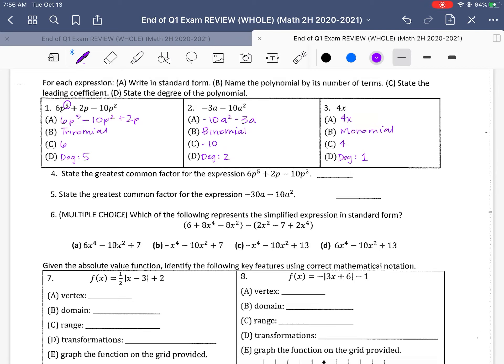Number 4, state the greatest common factor for the expression. So if we look at all of these terms and we say, all right, here's our expression. What's the greatest thing that can divide out of all of them? Well, it looks like 6, 2, and negative 10. We could divide out of 2. They're all even numbers. And then they all have at least one p-value. So a 2 would divide out of everything and one of the p's.